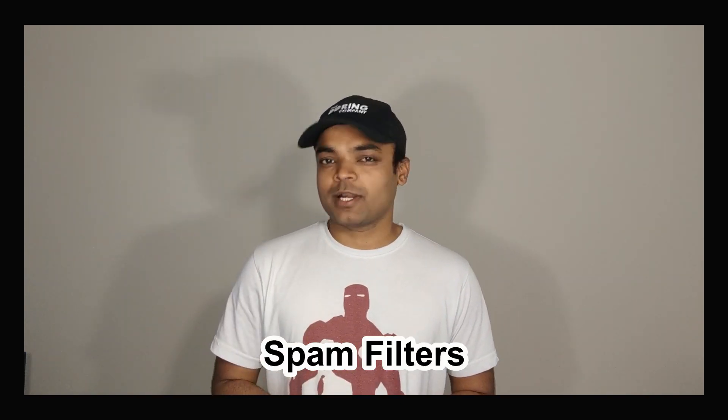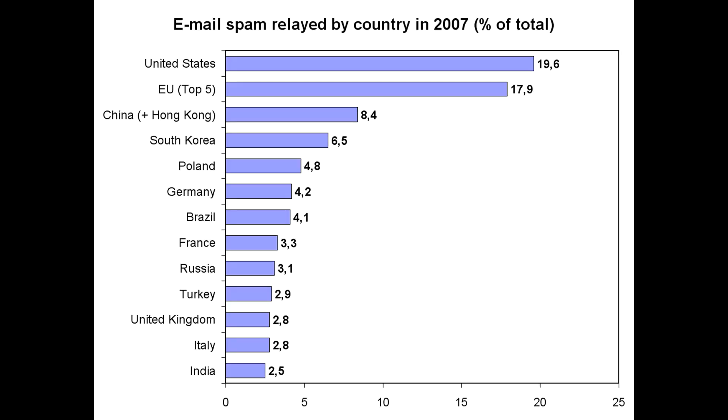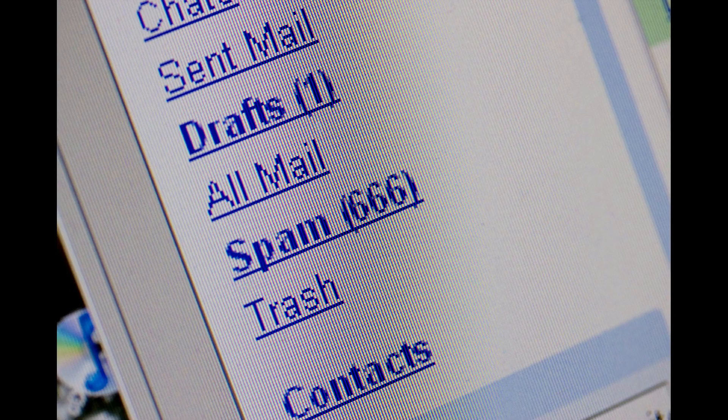The next major application is spam filters. Everyone is bombarded with spam emails. Email services like Google and Yahoo used to employ highly skilled professionals just to make spam filters, but nowadays AI can do it much better. It can also recognize patterns even if the subject, description and sender in the email are changed.